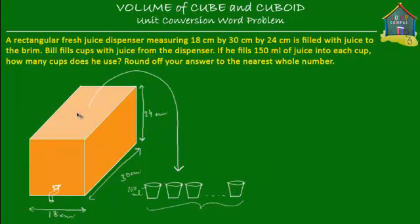First we have to find out how much juice is in this dispenser. This dispenser is filled to the brim, which means to the top — to its maximum capacity. So we have to find out the capacity of this dispenser, or the volume of juice inside it. That volume will be equal to the volume of juice inside all these cups together, which means this plus this plus this will equal the same as the dispenser's volume. So it's pretty straightforward — we have to find the volume of juice inside this dispenser.